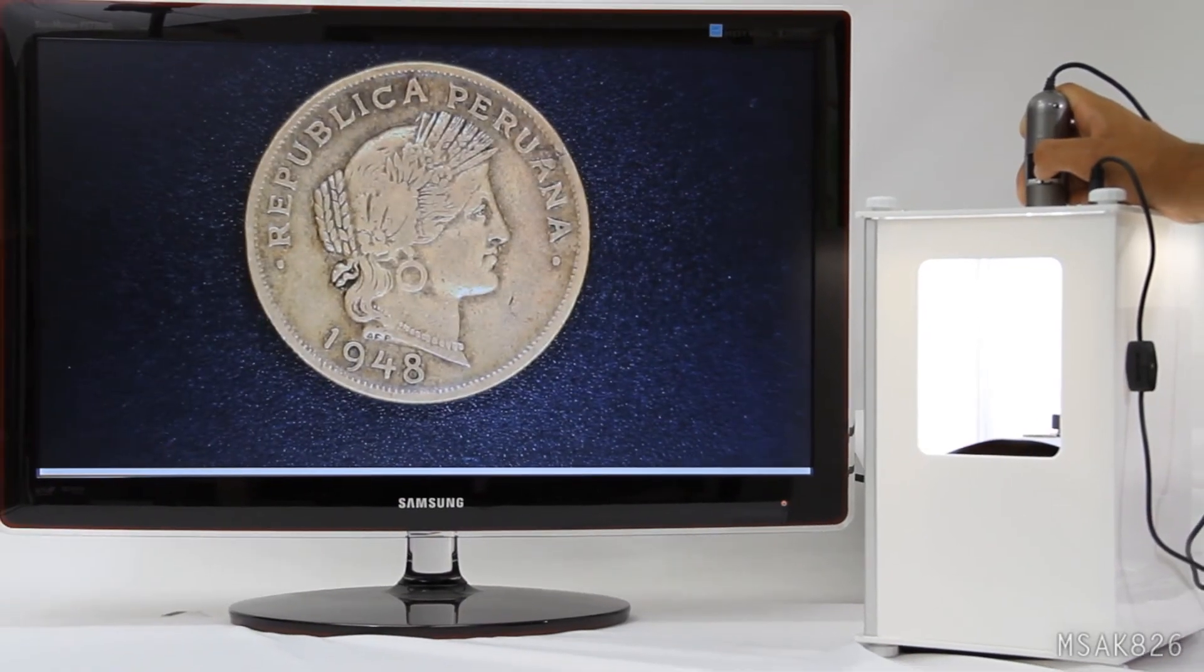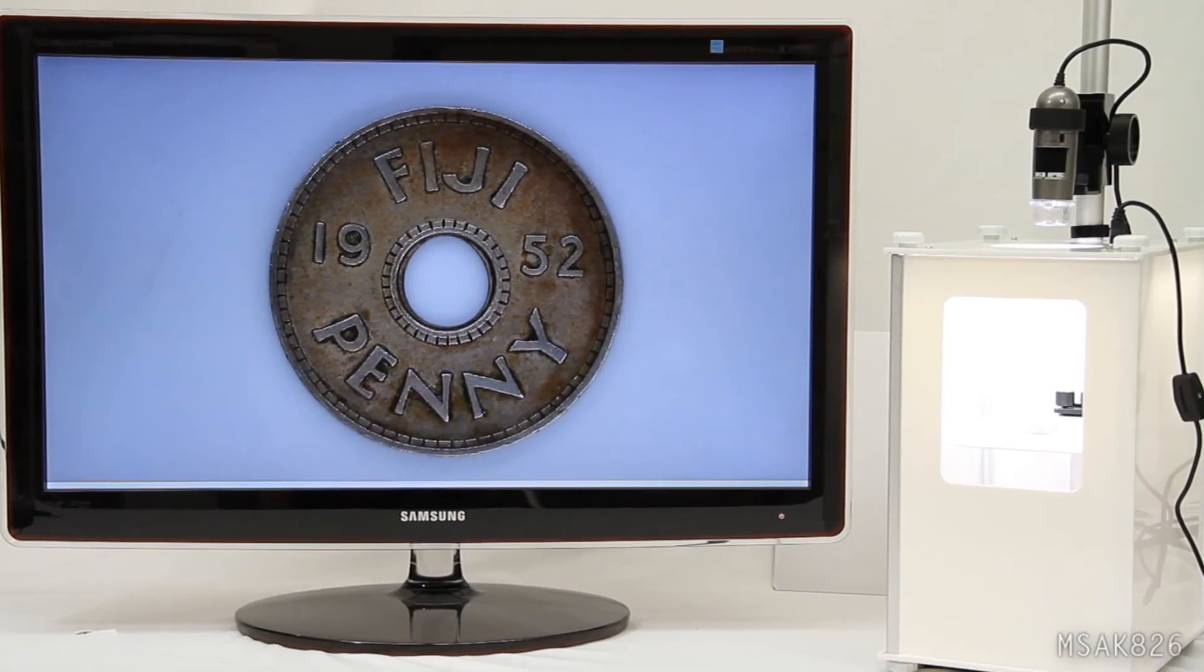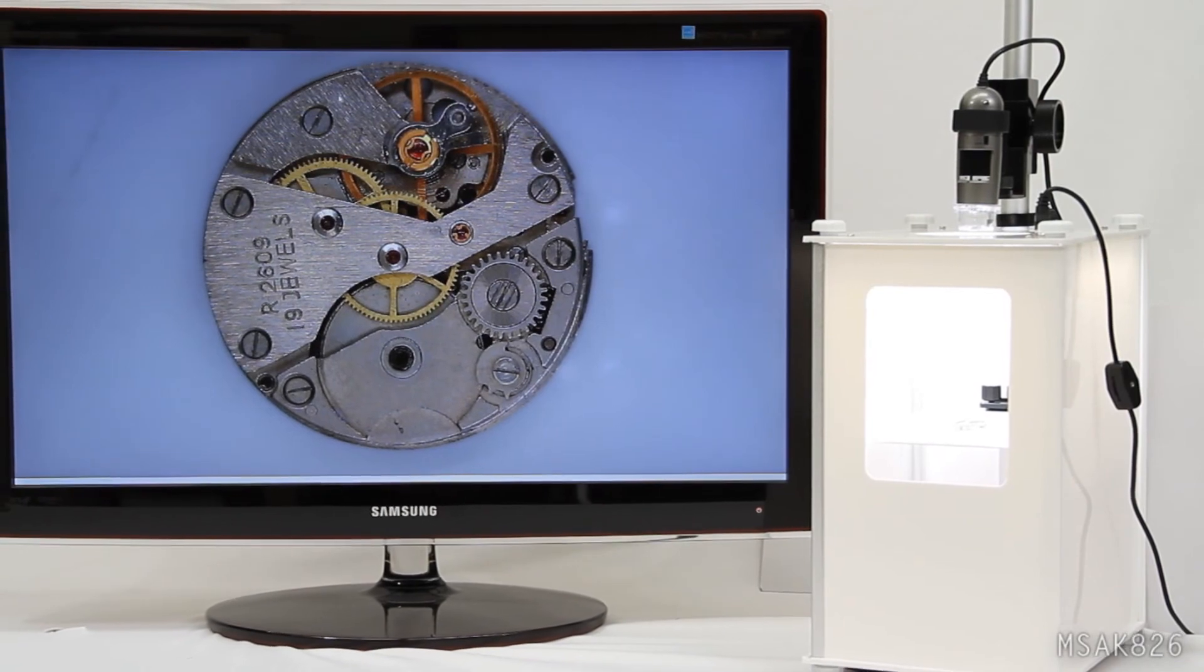The MS-AK-826 acts like a diffusion box, providing soft light while blocking unwanted glare.